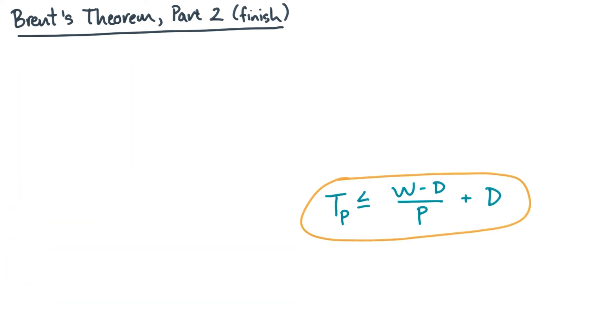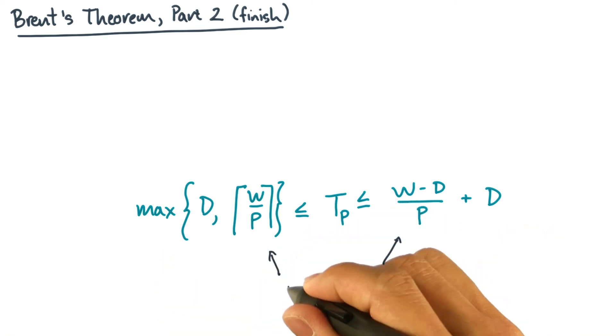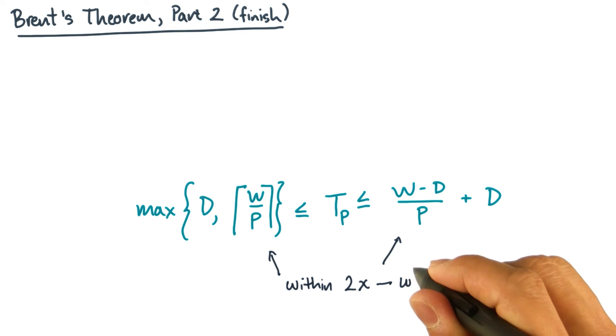Let me close by emphasizing one final point. What you just derived is an upper bound. That is, given a DAG, Brent predicts the upper limit on time. But you also had these lower bounds. Now an interesting factoid is that this upper limit and this lower limit are both within a factor of two of one another. Can you see why?